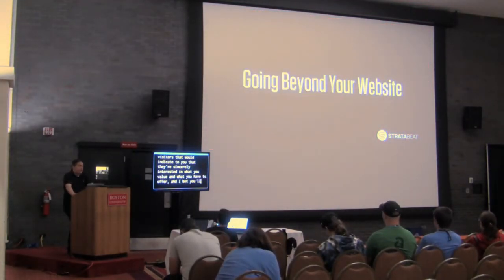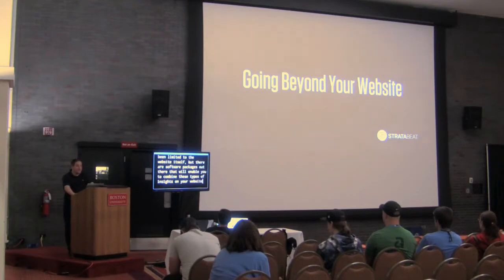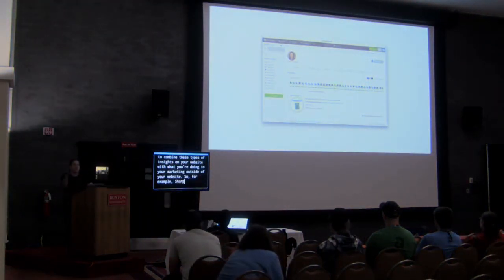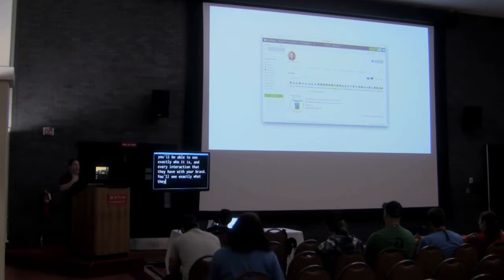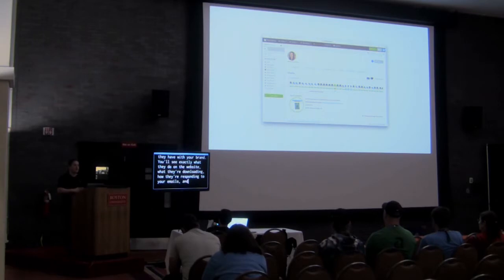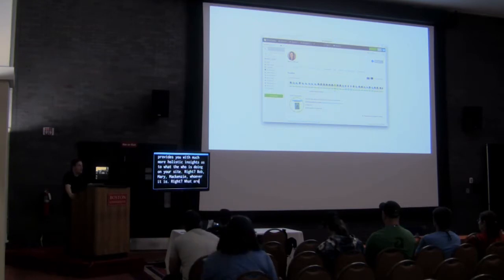You can also go beyond your website. Everything we've been looking at has been strictly limited to the website itself. But there are software packages that enable you to combine these behavioral insights on your website with what you're doing in your marketing outside of it. SharpSpring and HubSpot are examples — once you have someone's email address and they opt in, you can see every interaction they have with your brand: what they're doing on your website, what they're downloading, how they're responding to your emails. It provides a much more holistic picture.